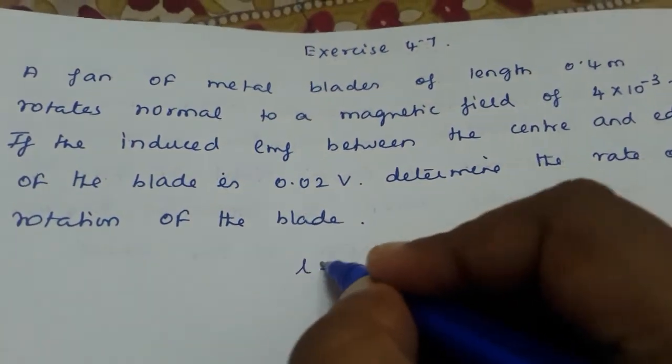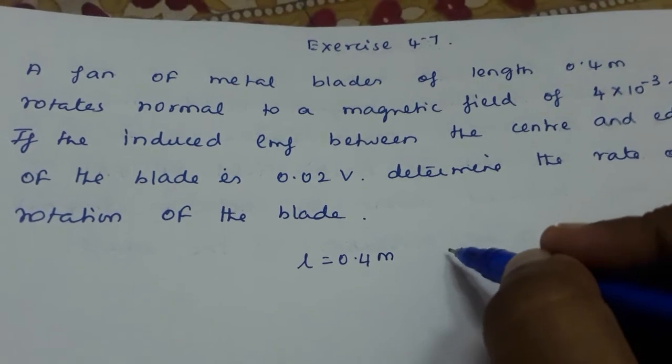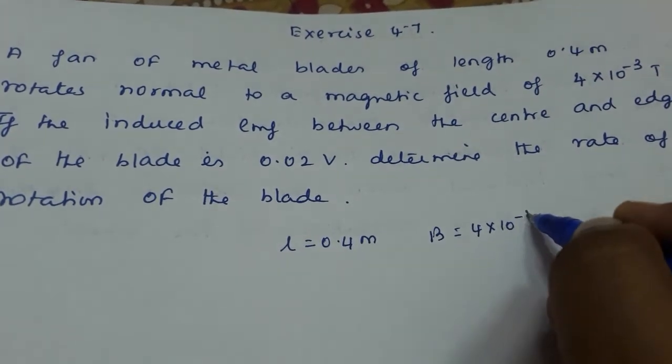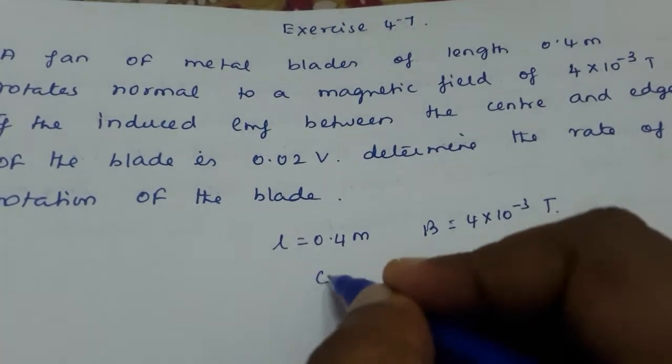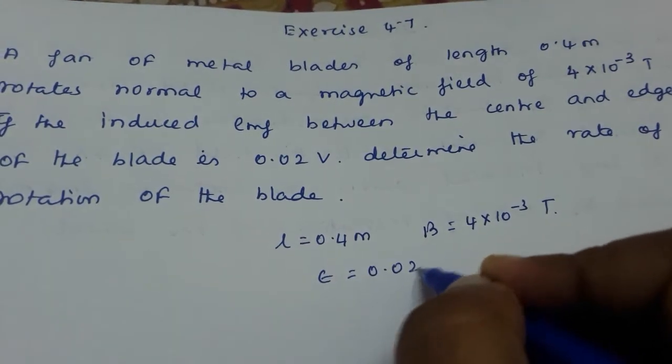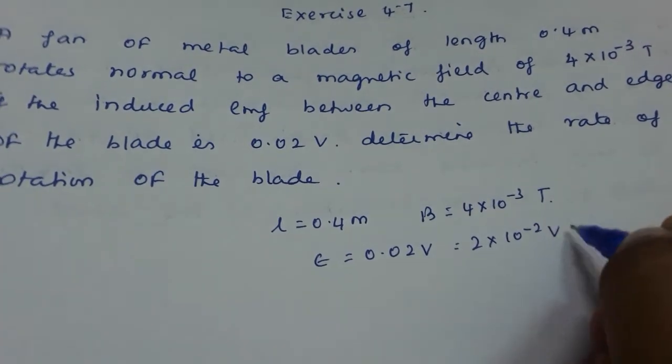So here the length of the blade is given as 0.4 meter. And the magnetic field is given as 4 into 10 raised to minus 3 tesla. And the EMF is given as 0.02 volt.